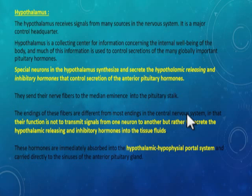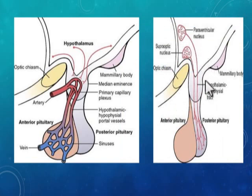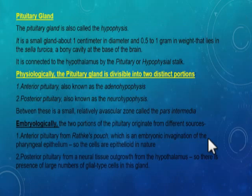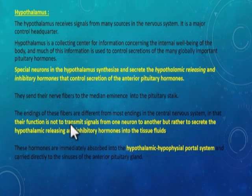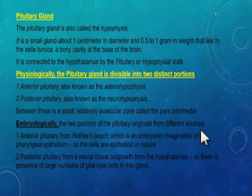The hypothalamus connection with the posterior pituitary is through the nervous system. The neurons connecting the hypothalamus to the posterior pituitary are different from other neurons because at their terminals they secrete hormones. Their function is not to transmit signals from one neuron to another, but to secrete the hypothalamic releasing and inhibitory hormones into the tissue fluids. These hormones are then immediately absorbed into the hypothalamic-hypophysial portal system and carried directly to the sinuses of the anterior pituitary gland.